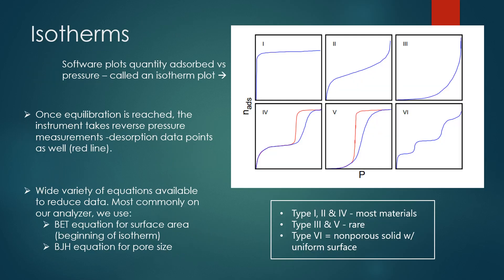This is what our data actually looks like when it comes off the program. These plots are plotting pressure versus quantity adsorbed and they're called isotherms. The software makes these plots for you. You can see in some of those cases a red line as well as a blue line. It's actually an indication of when the instrument is at equilibration - it goes in reverse and takes desorption data points as well, so that's the red line you're seeing.